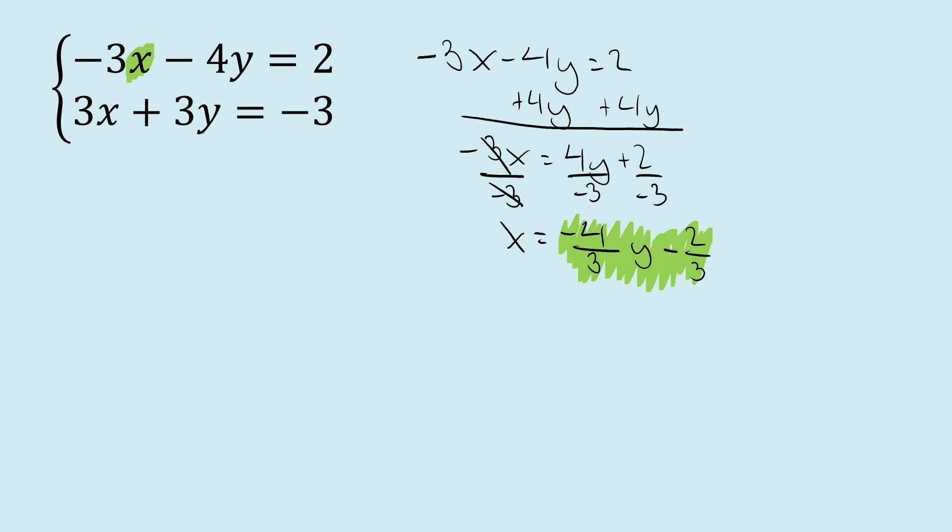So our next step is we want to substitute this expression into the bottom equation, our second equation, in for the variable. We have it solved for x, so let's put that value, that quantity in here. Minus 6 over 3 plus 3y equals negative 3.